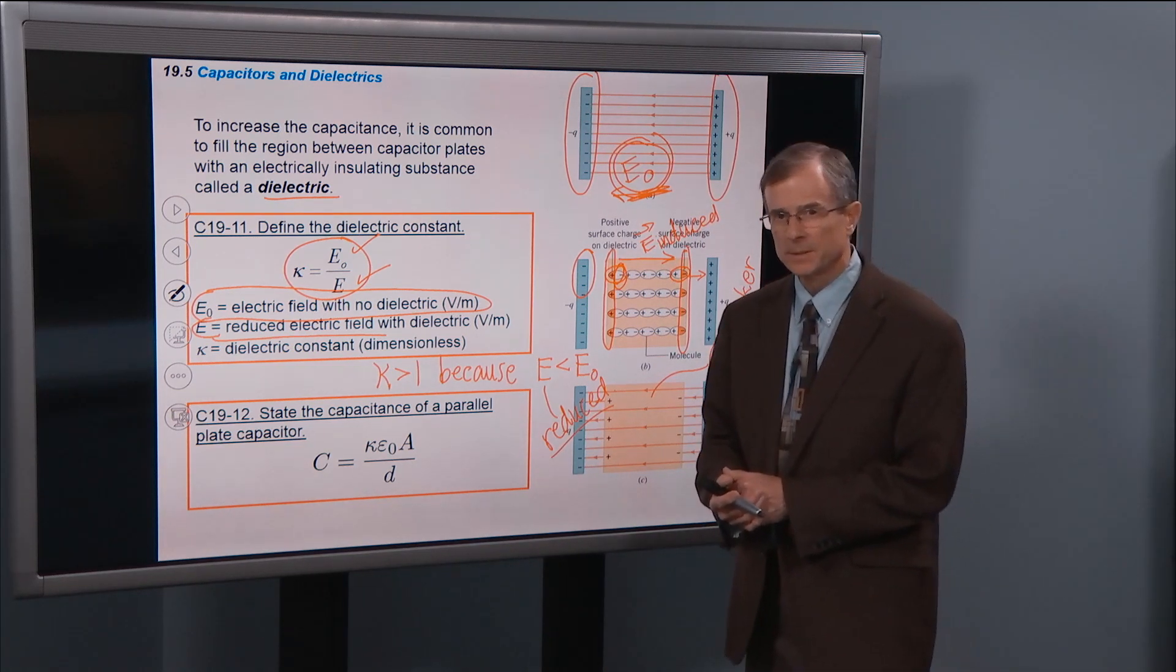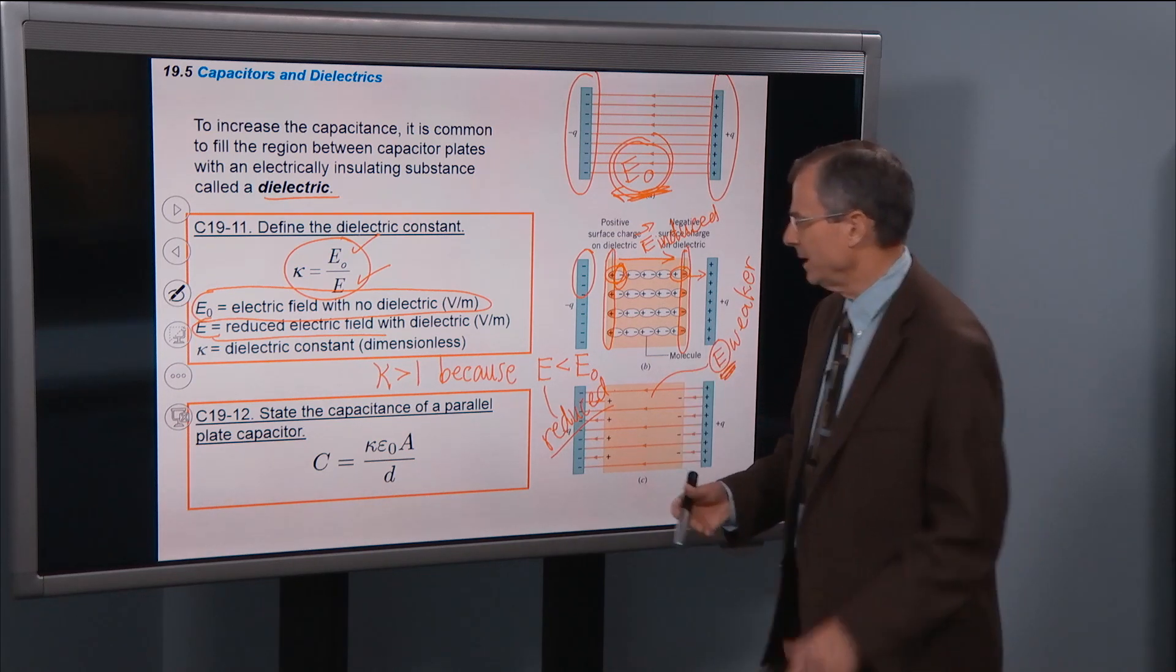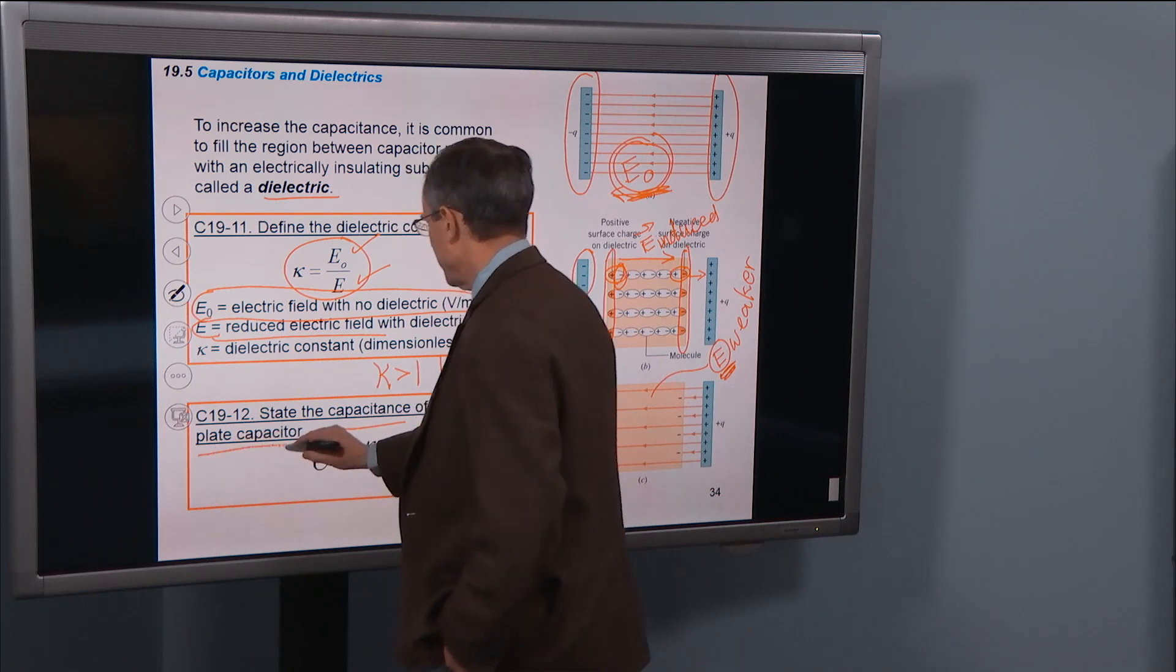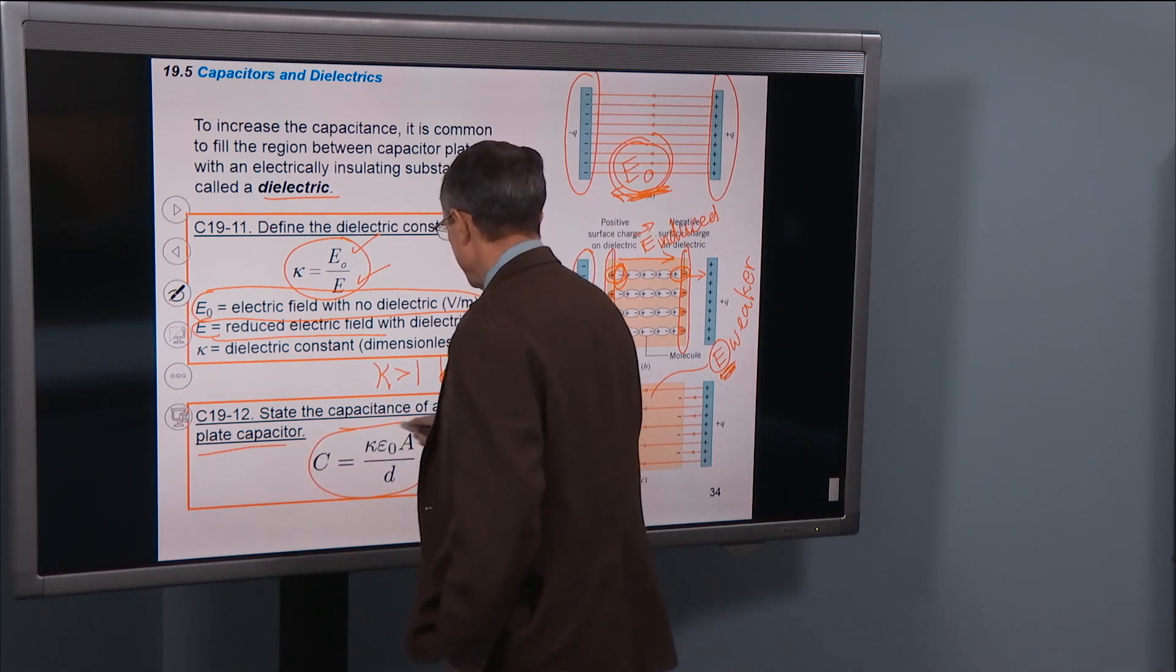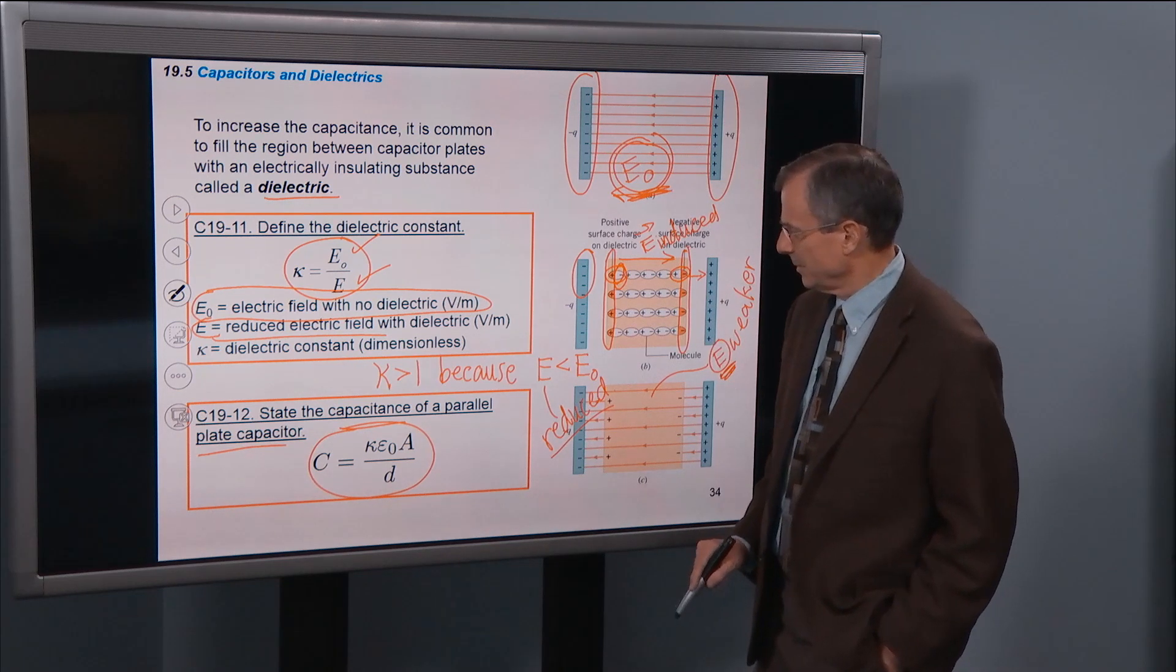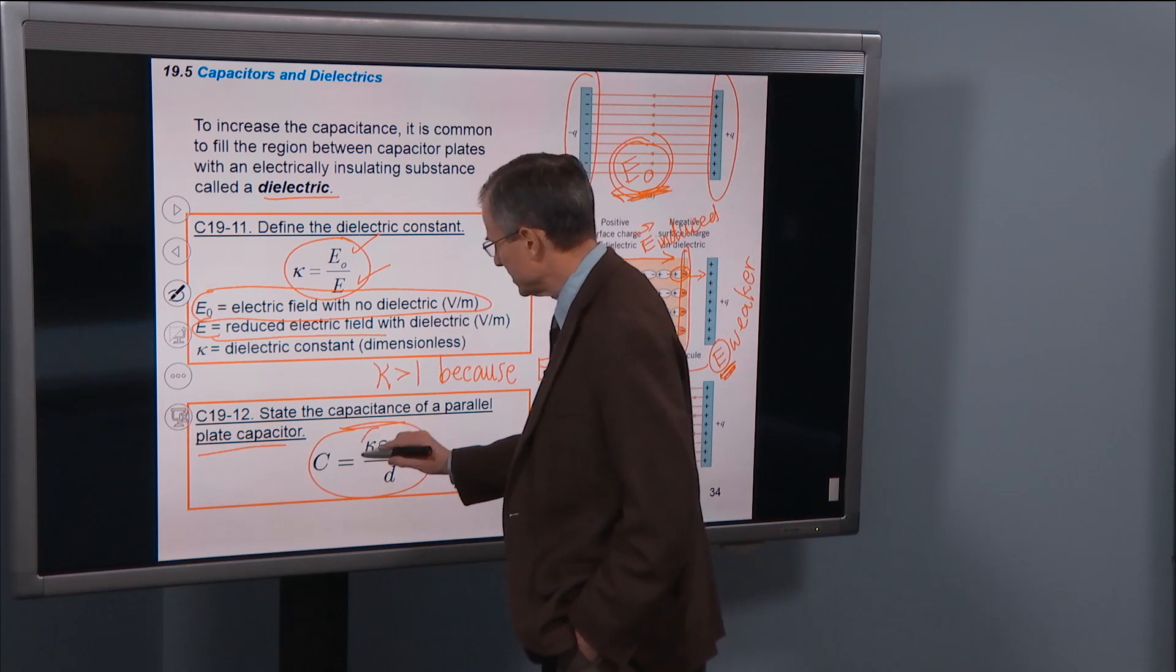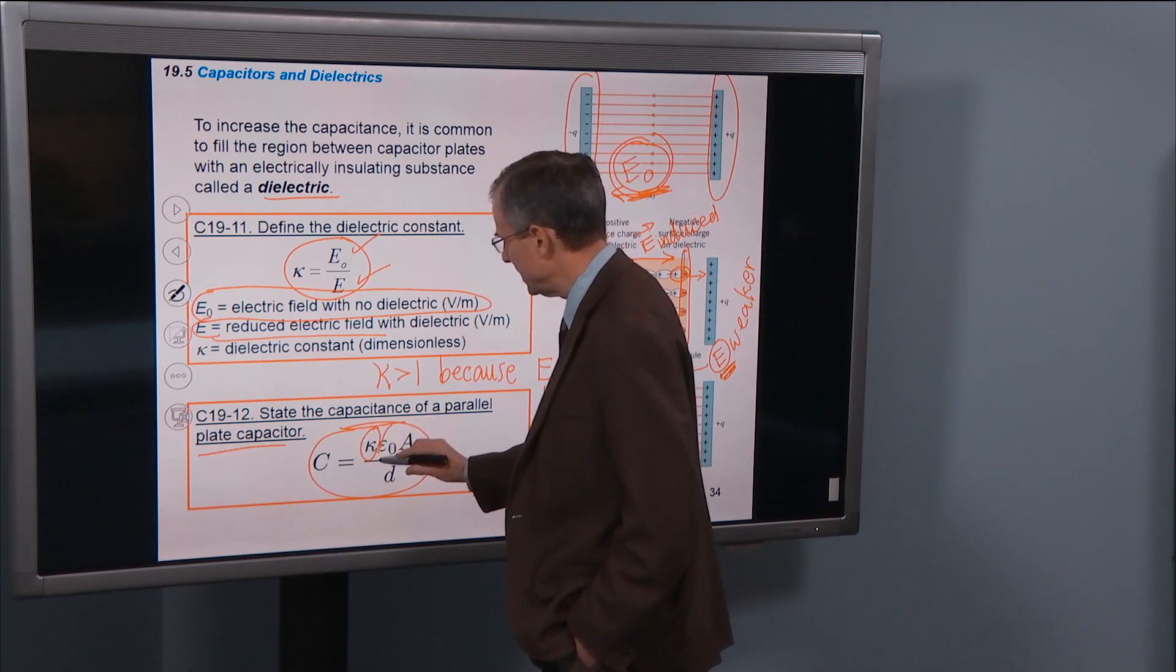We talked about the, well, let me just state it. The capacitance of a parallel plate capacitor is this. You say, well, that's a lot to digest. We'll say a little bit more about this later. But it's the dielectric constant times ε0. What's ε0? It's the electric permittivity.